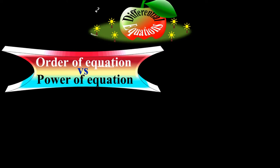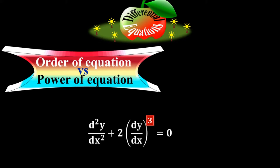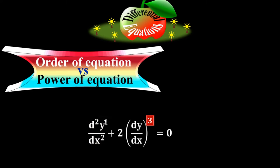Look at one more differential equation. The maximum derivative term is d²y/dx², not dy/dx. This term is raised to the power 1, not 3. So the power of this differential equation is 1, and the order is second order because the highest derivative term is d²y/dx², which is a second derivative. The power is 1, not 3.